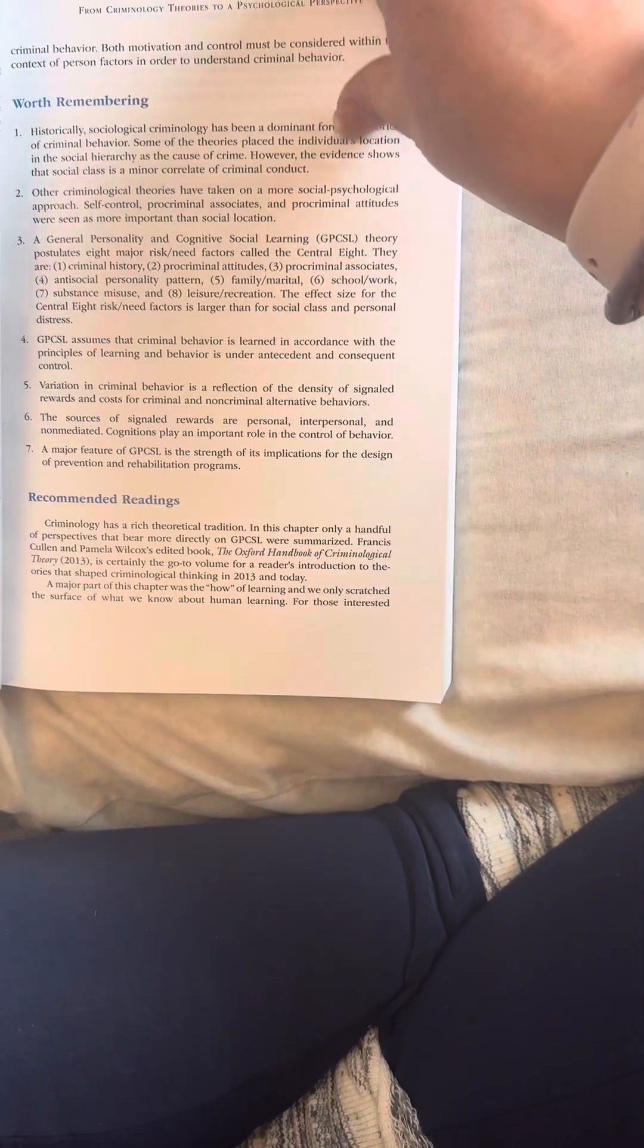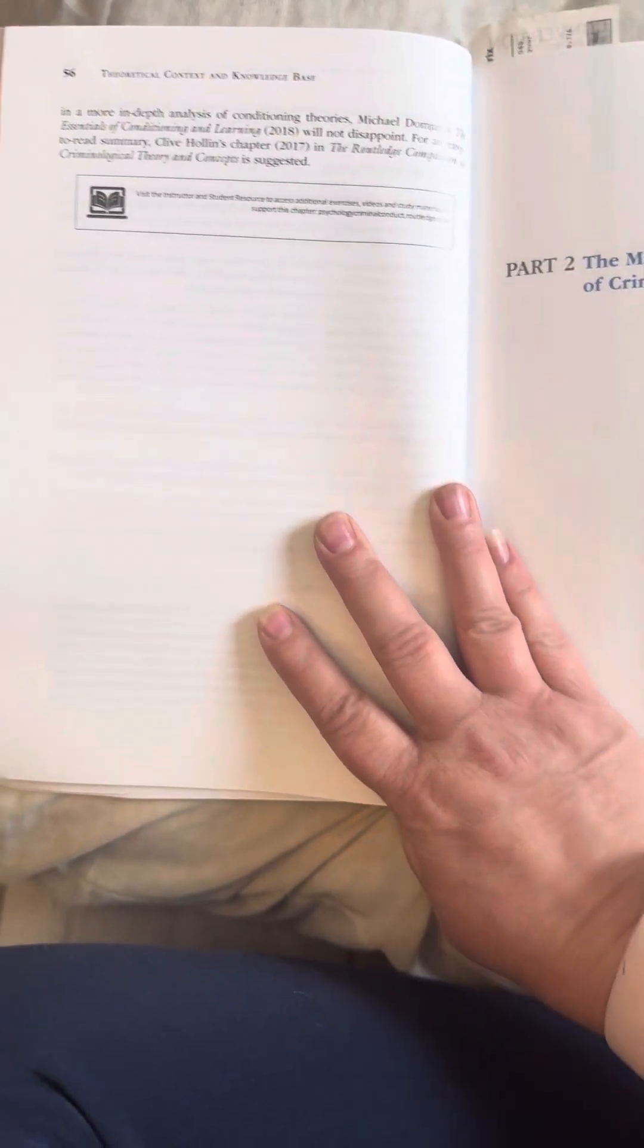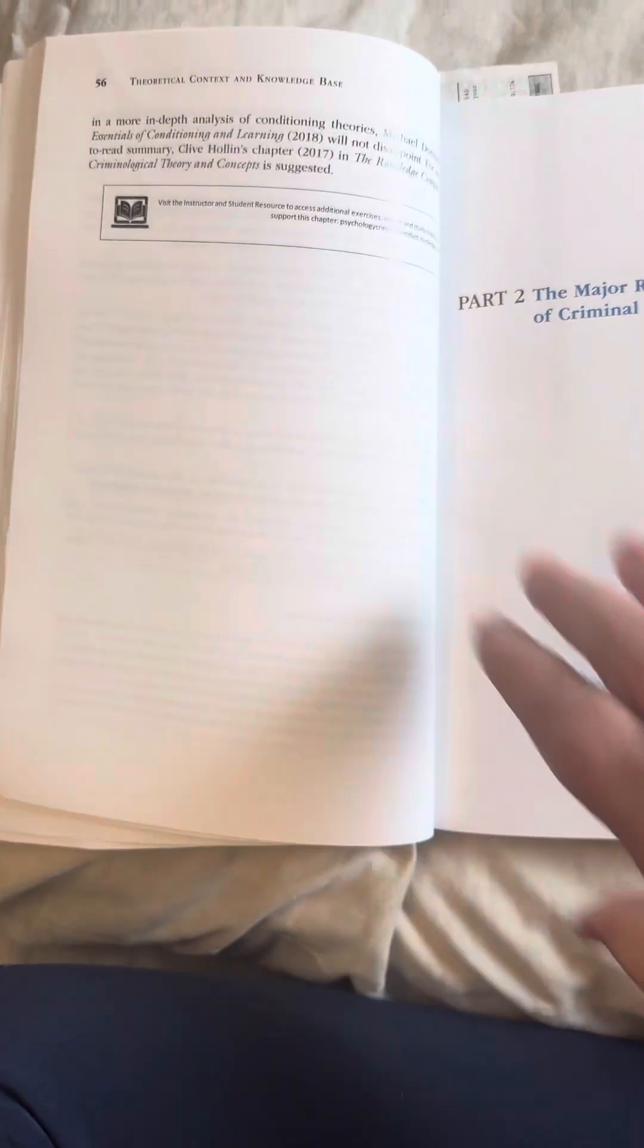Four, GPCSL assumes that criminal behavior is learned in accordance with the principles of learning and behavior is under antecedent and consequent control. Five, variation in criminal behavior is a reflection of the density of signal rewards and costs for criminal and non-criminal alternative behaviors. Six, the sources of signaled rewards are personal, interpersonal, and non-mediated. Seven, cognitions play an important role in the control of behavior. Eight, a major feature of GPCSL is the strength of its implications for the design of prevention and rehabilitation programs. Here's the recommended readings. And that is the end of chapter three. Yes, that's the end of chapter three. Thank you.